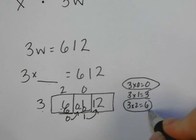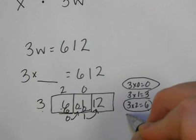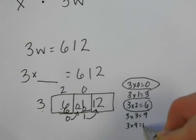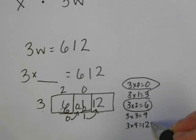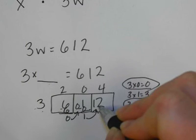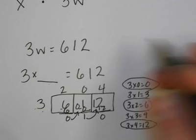Now 12. I haven't gotten to 12 yet, so I have to keep going. 3 times 3 is 9, and 3 times 4 is 12. I got where I wanted to go, so I circle it, outside, top, bottom. 12 minus 12 is 0, so there's no remainder.